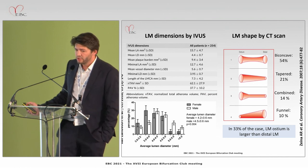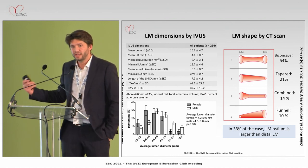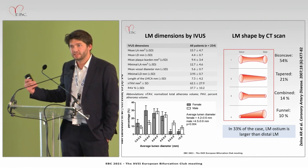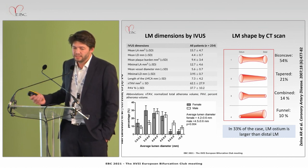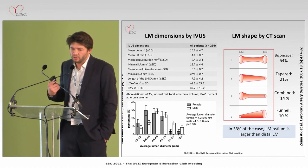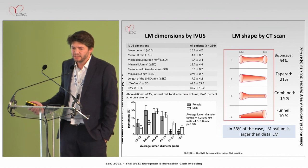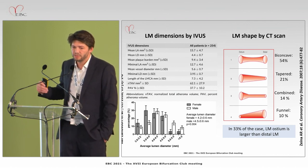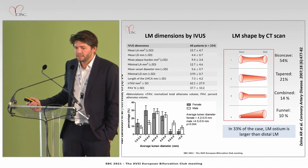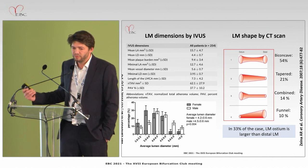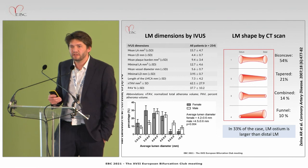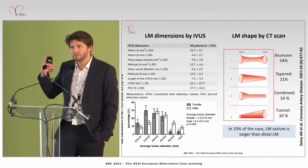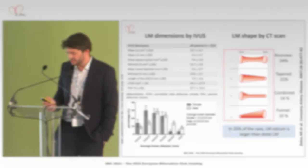Moreover, the left main shape when you look at it with CT scan is not cylindric. In almost all cases there is a significant difference in the luminal area between the ostium and the distal segment. And in 33% of cases, the left main ostium is larger than the distal left main — something we have to keep in mind when doing PCI.